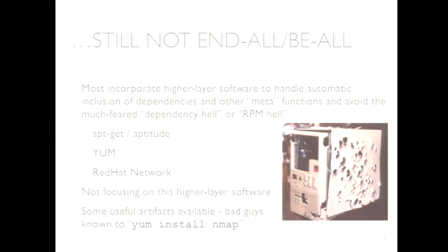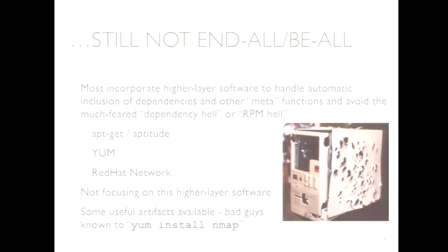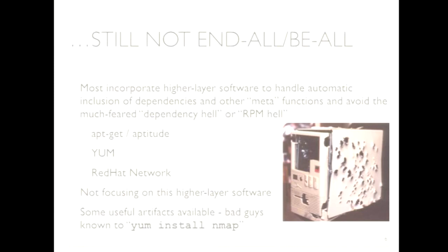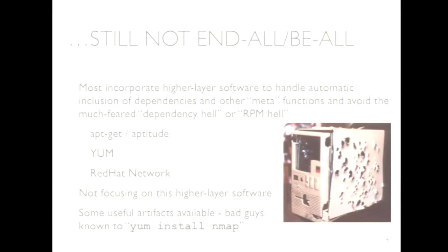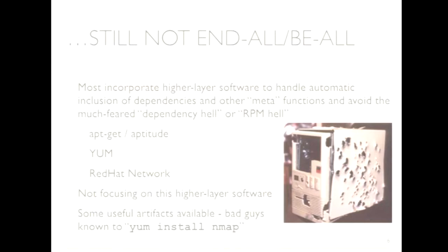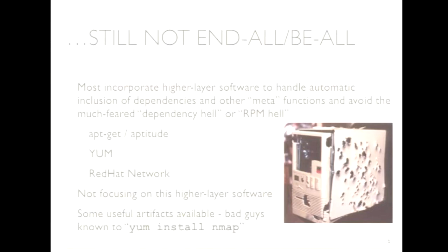Some very smart people developed software around that: apt-get, aptitude, yum — used in most RPM-type installations — as well as Red Hat Network, a commercial offering. These manage dependencies. Say you want tcpdump: 'yum install tcpdump' — it says you need libpcap for that, installs it, asks if you want it taken care of, downloads it, installs it, you're good to go. These higher-level tools have taken a lot of the headache out of RPM. But tonight we're going to talk about the RPM database itself.